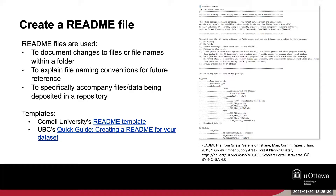A readme file documents changes to files and file names within a folder, explains file naming conventions for future reference, and can accompany files and data being deposited in a repository. At the basic level, a readme file will contain project information: the title, contributors or authors, grant information, contact information, the location where the data lives, whether there are backups and how they're saved, useful information about how the data is structured, and if any special software is needed. Cornell University has a ready template for you to complete, and the University of British Columbia has a quick guide on how to create a readme file for your dataset.